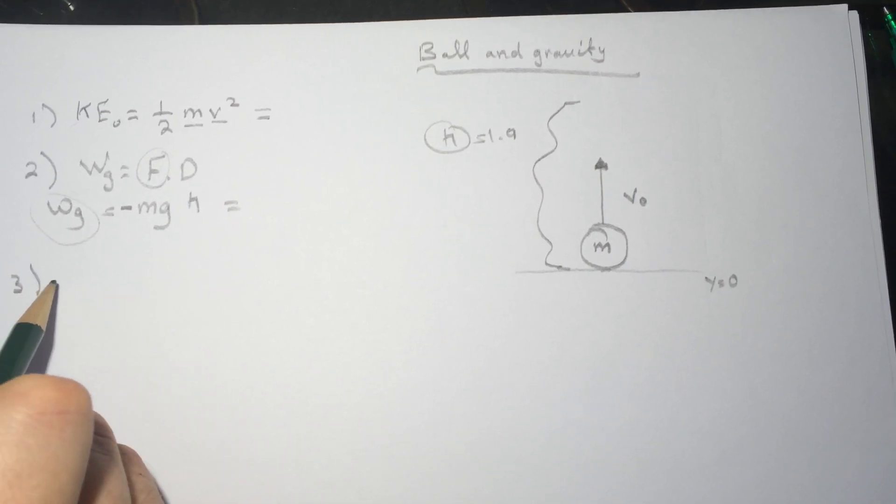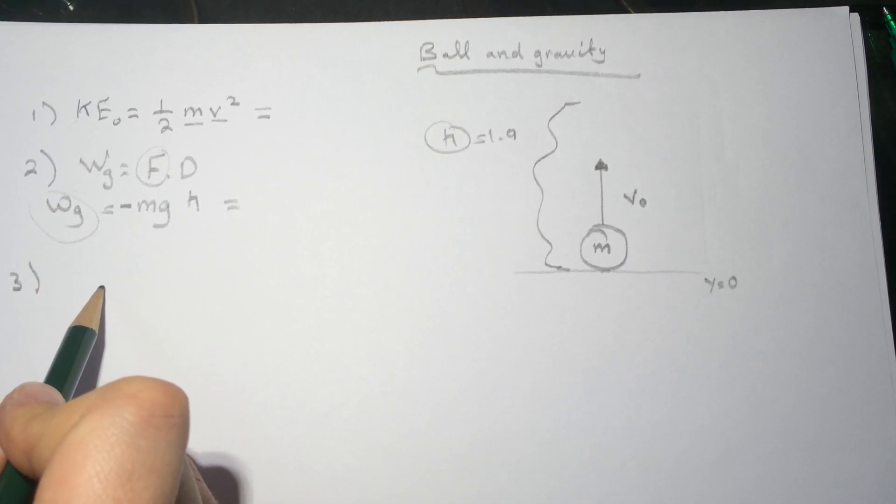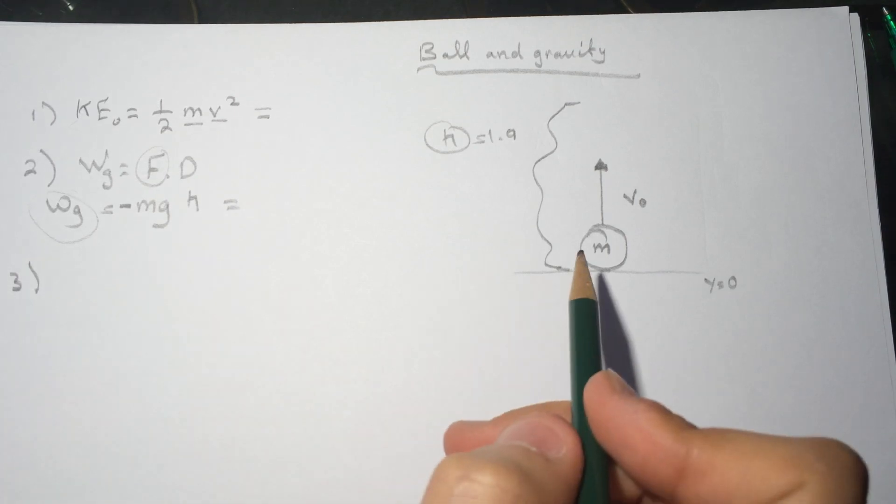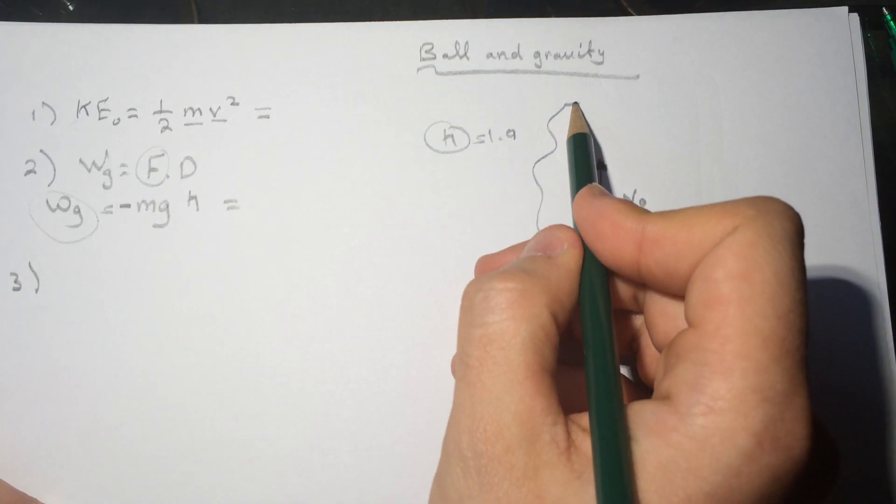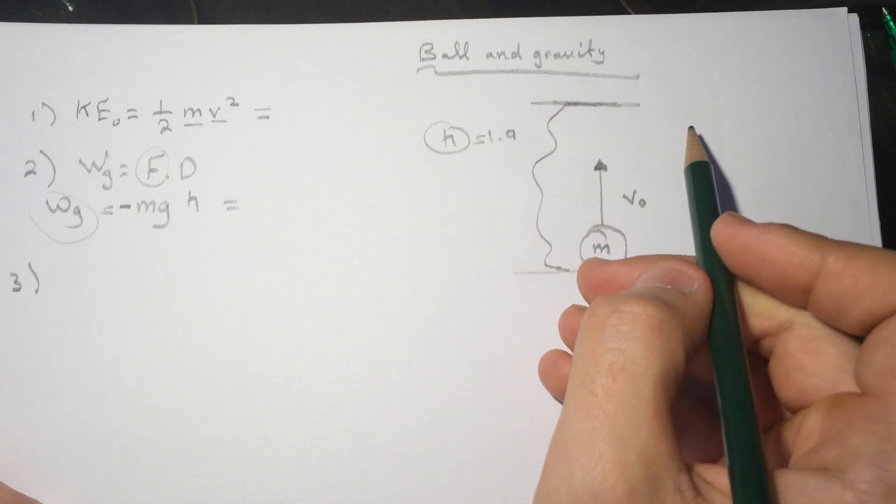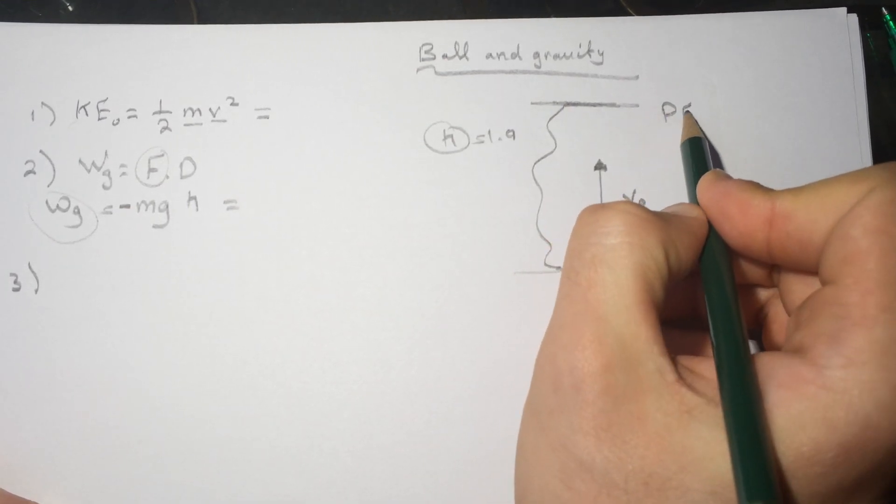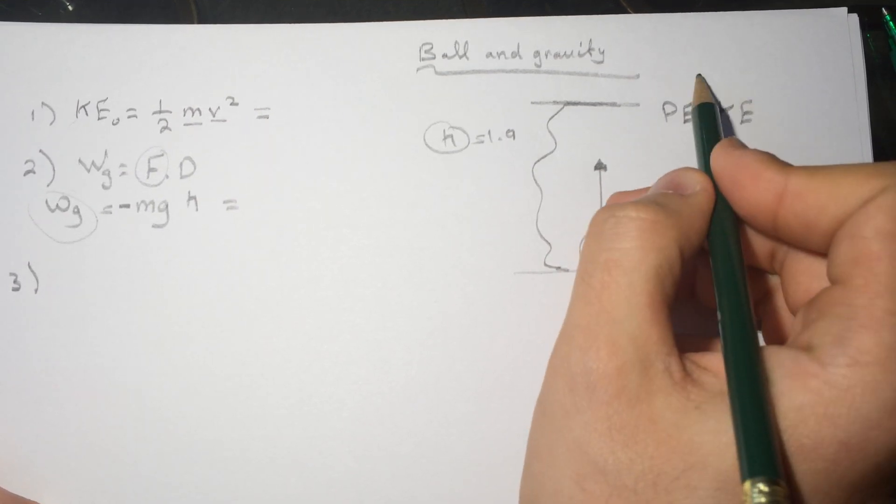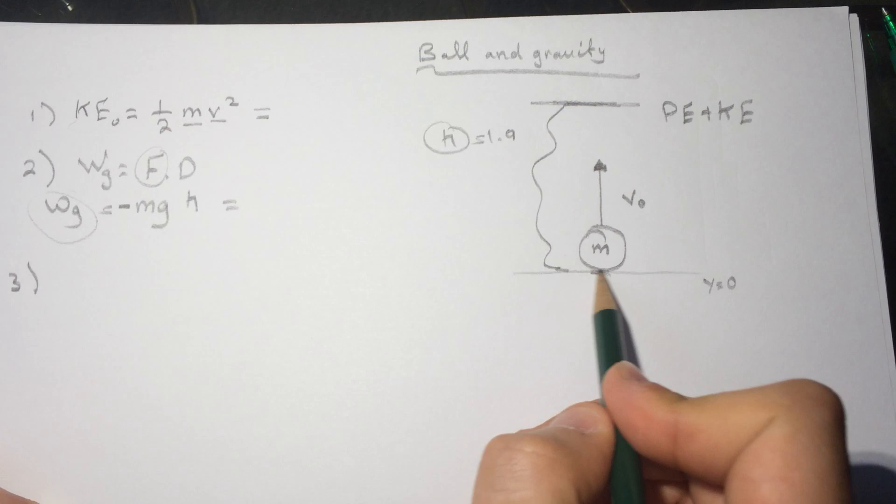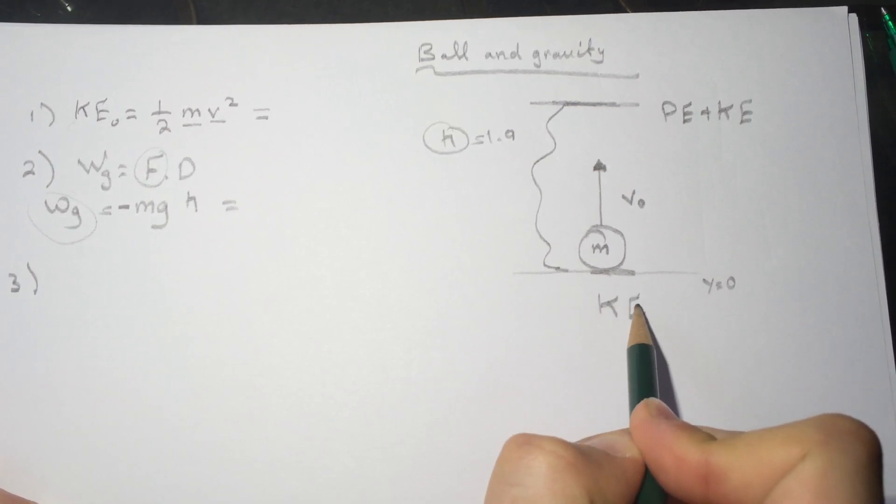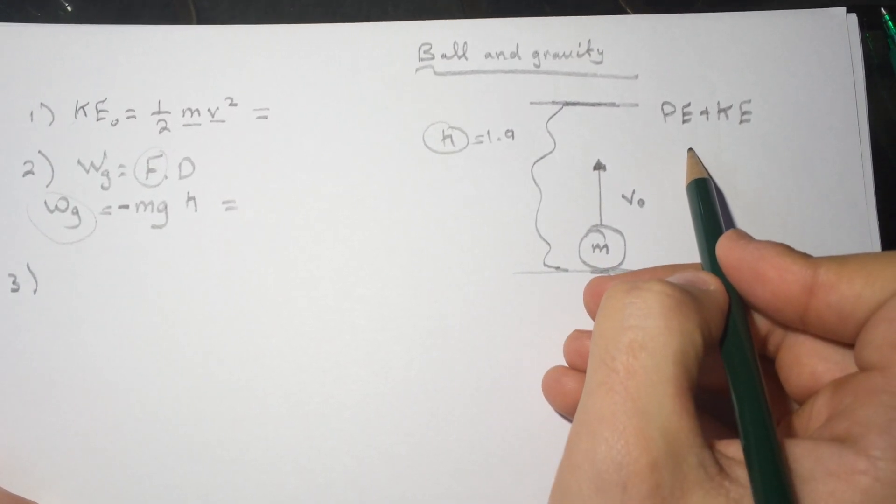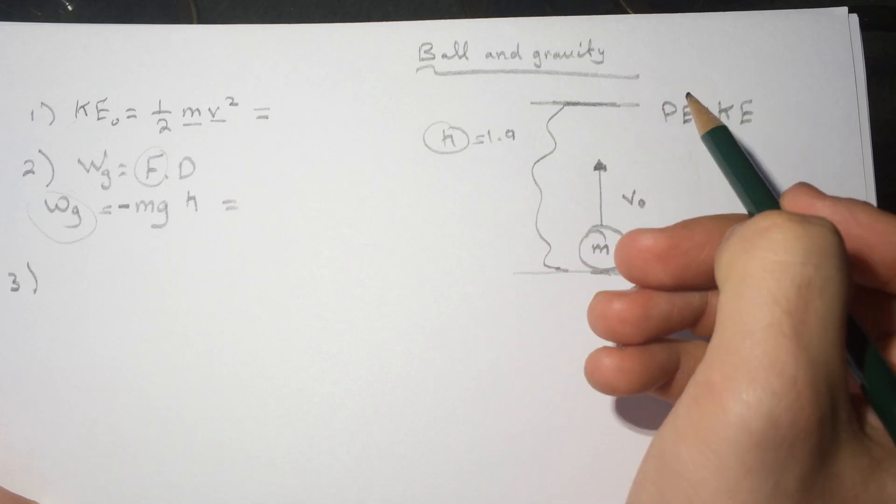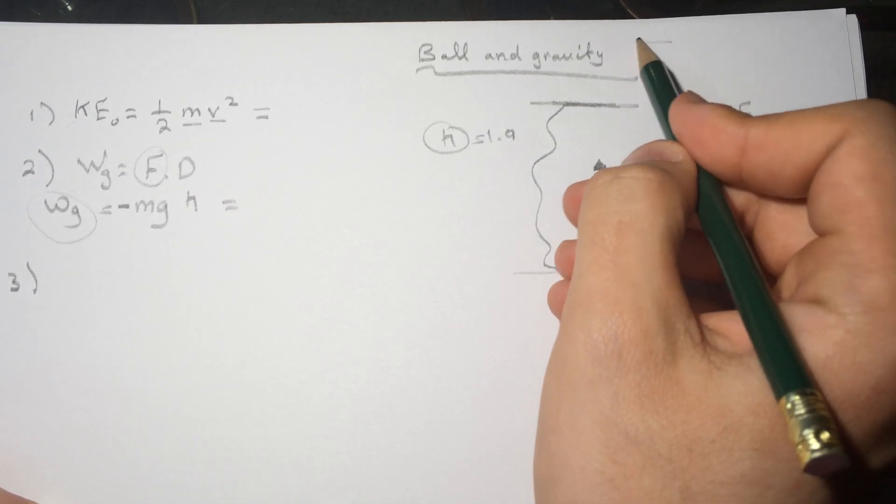Question number three is asking what is the speed of the ball at height h = 1.9. So at this point here there is still PE plus KE. It's not all translated to PE, the potential energy. We started with KE and we're still losing KE and increasing in potential, and then until we